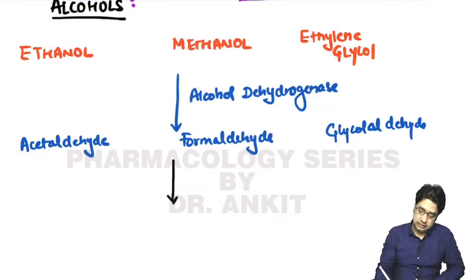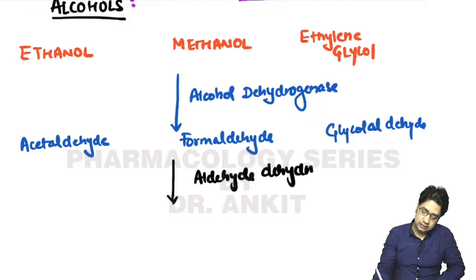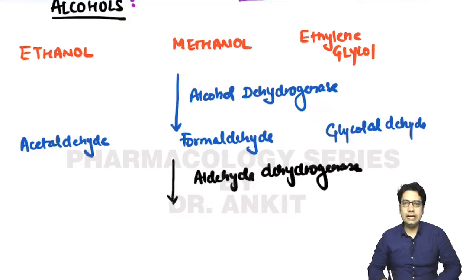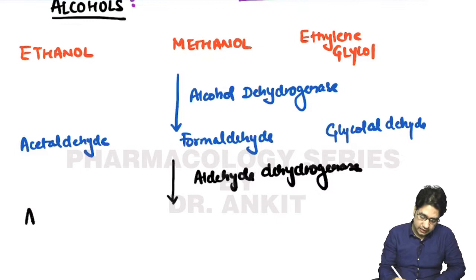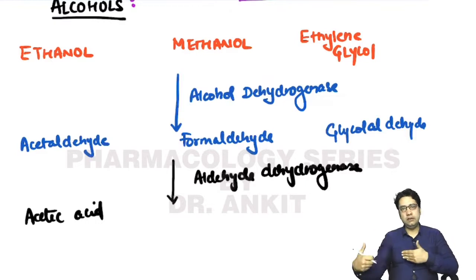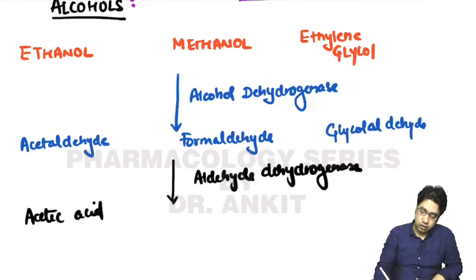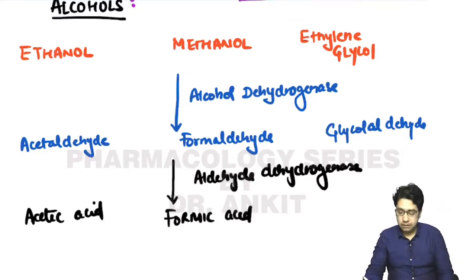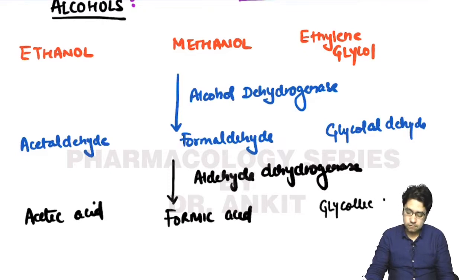After these aldehydes, another enzyme known as aldehyde dehydrogenase converts them into their respective acids. Acetaldehyde is converted into acetic acid, which is highly water soluble and rapidly excreted in urine. Methanol's formaldehyde is converted into formic acid, glycolaldehyde into glycolic acid, and an enantiomer of glycolic acid - oxalic acid - is also formed.